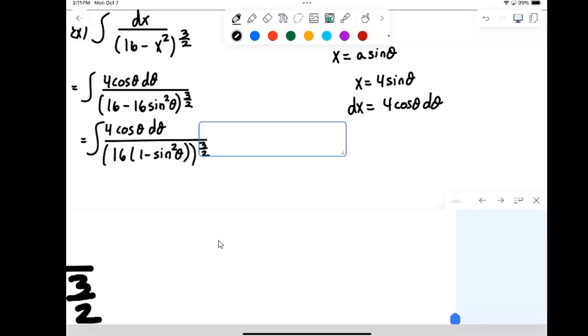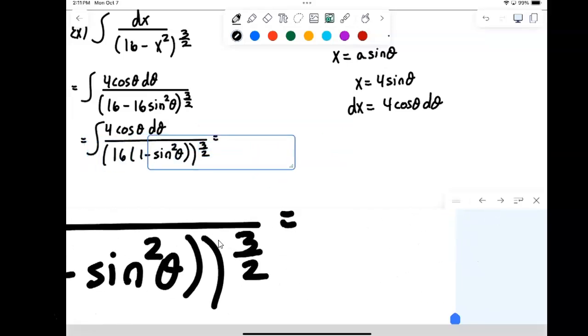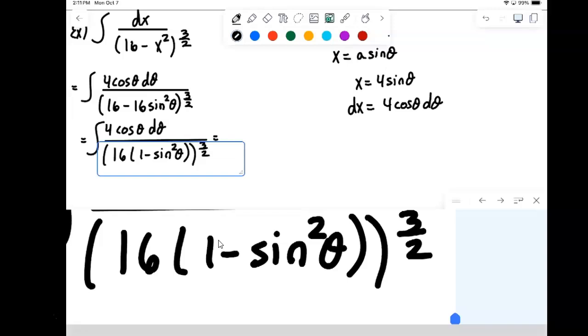So a few things first. Remember, when you raise something to a fractional power like 3 halves, you've got two choices. We can either raise it to the 3rd power, then do the square root, or we can take the square root and then raise it to the 3rd power.